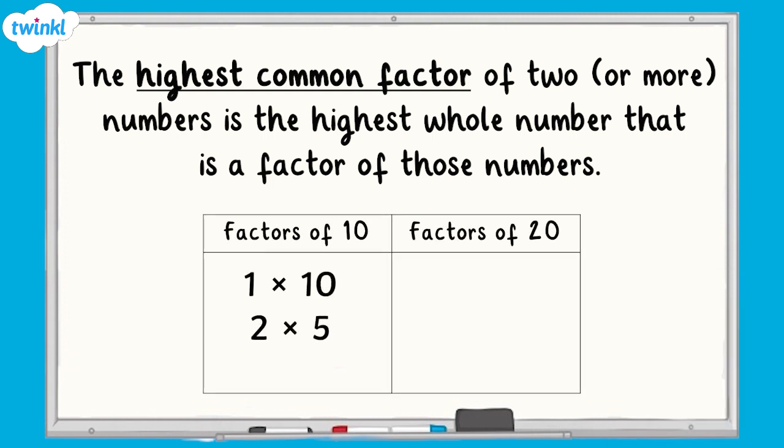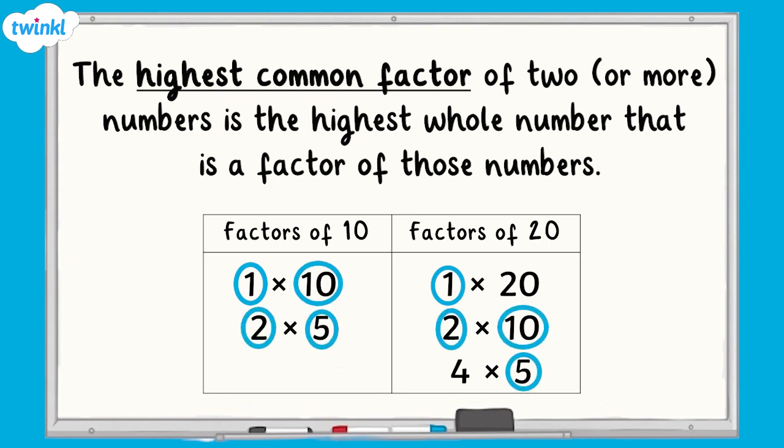the factors of 10 are 1, 2, 5 and 10. And the factors of 20 are 1, 2, 4, 5, 10 and 20. The common factors of 10 and 20 are therefore 1, 2, 5 and 10. And the highest common factor is 10.